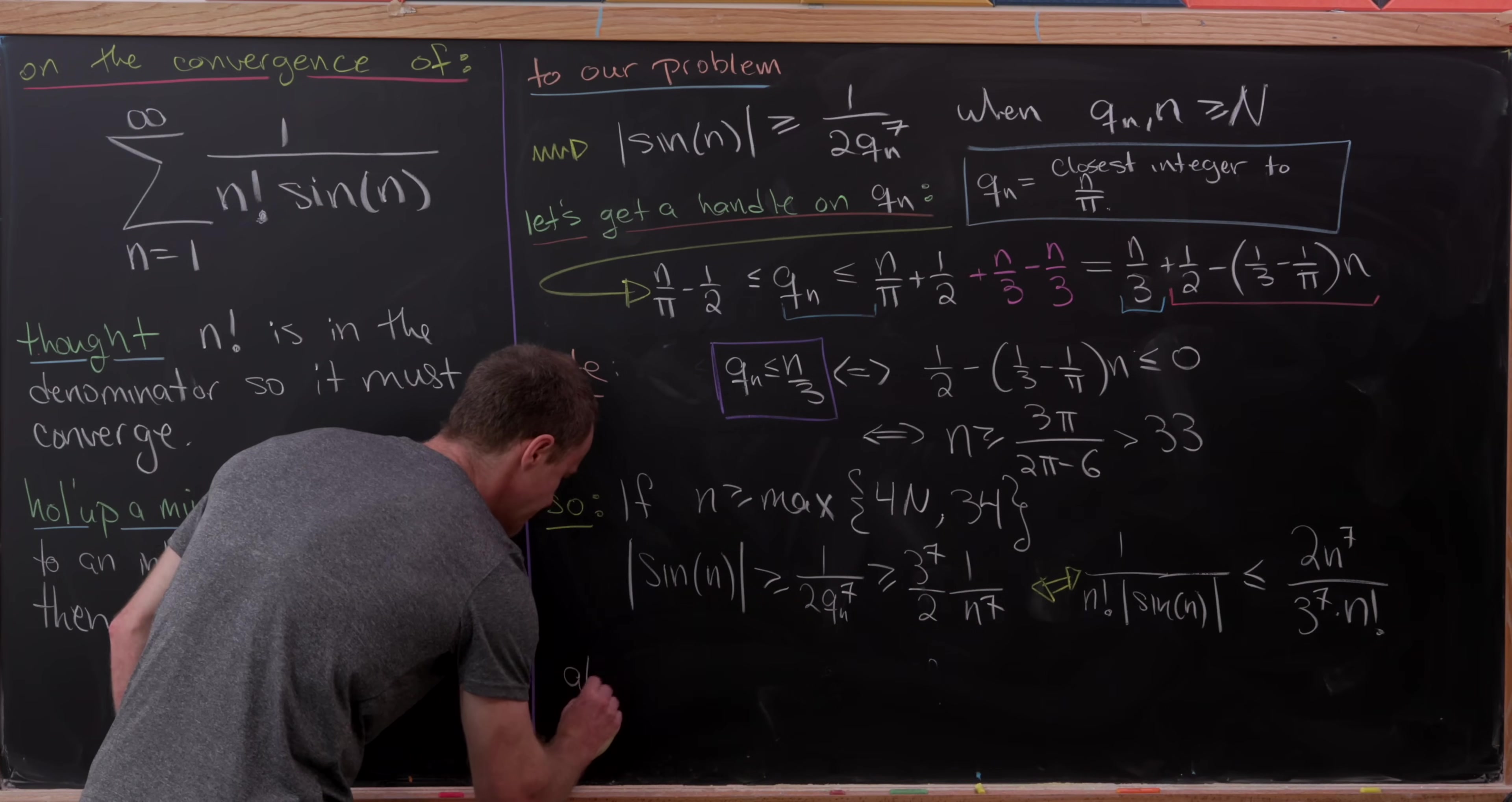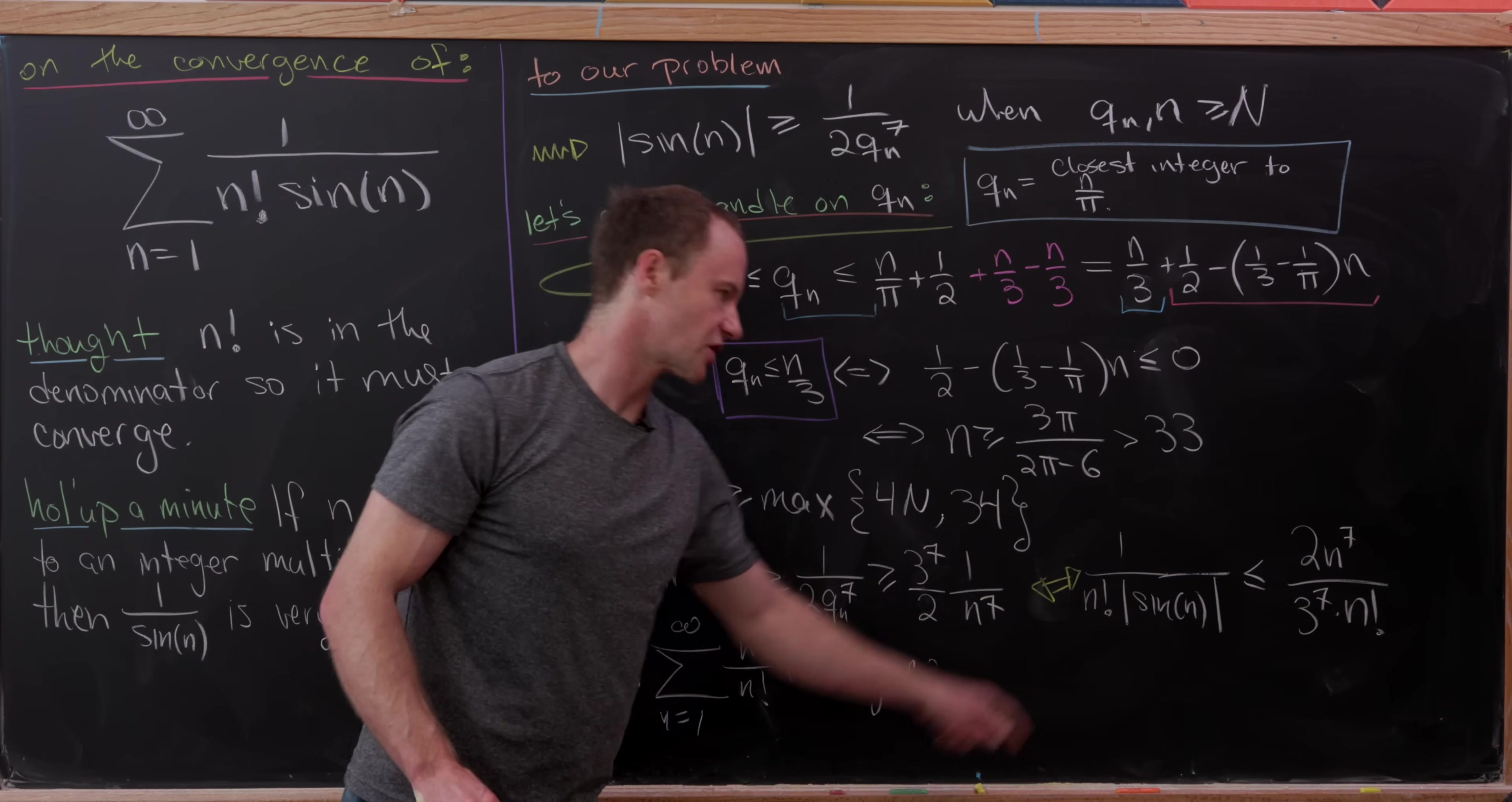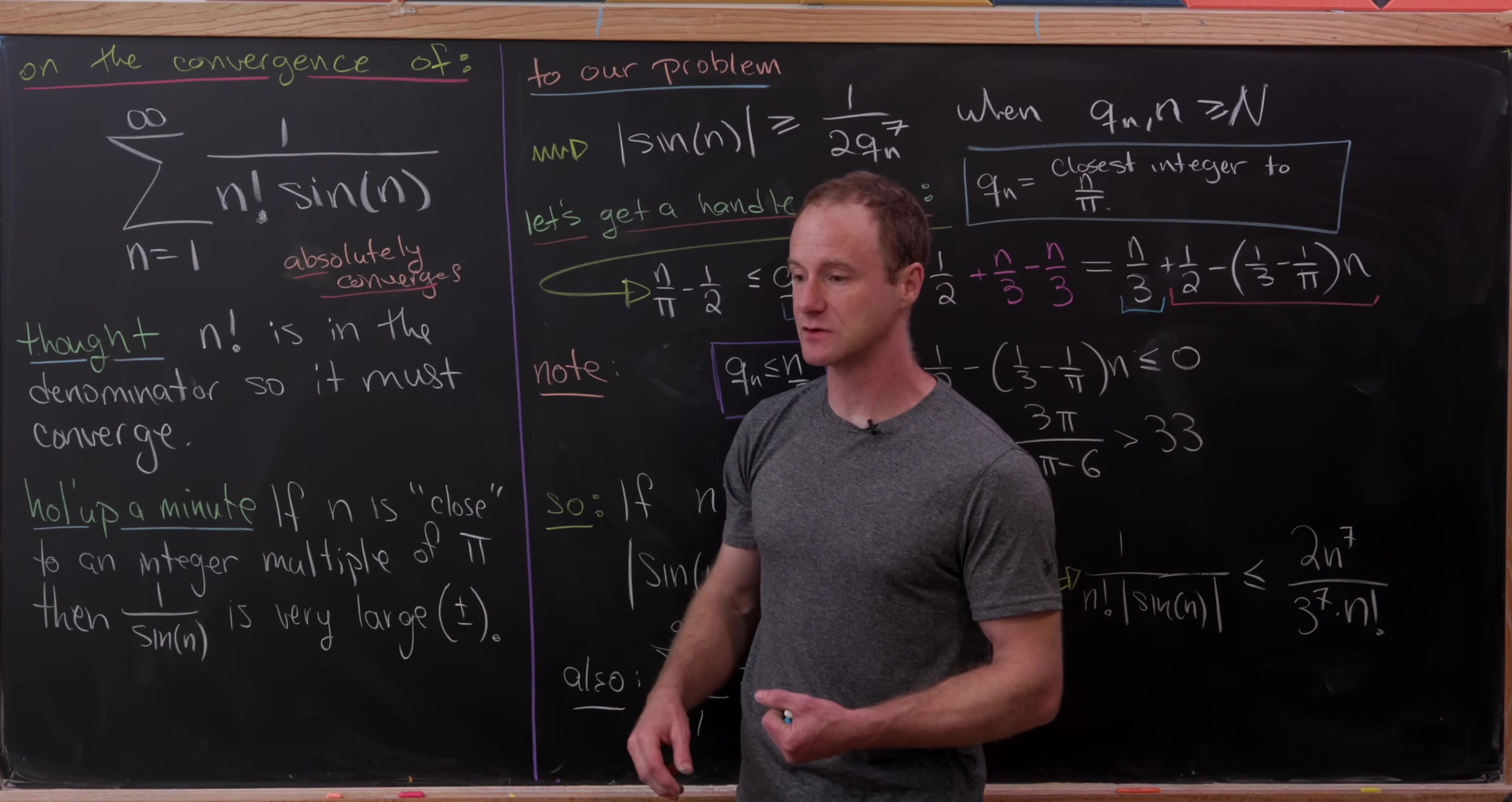We can show the following series converges: the sum as n goes from 1 to infinity of n to the 7 over n factorial converges. That's pretty clear using standard methods from calculus. All our terms are positive because n factorial is always positive and we have an absolute value. Which means our series absolutely converges. We've determined that the sum as n goes from 1 to infinity of 1 over n factorial times sine of n absolutely converges.